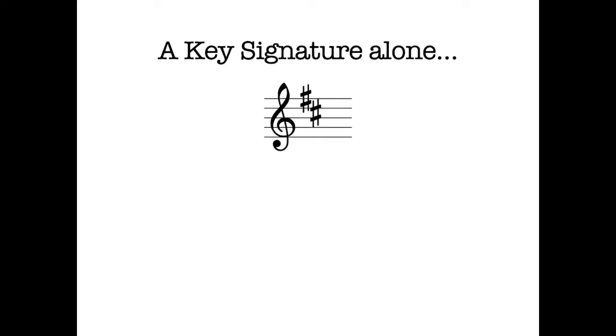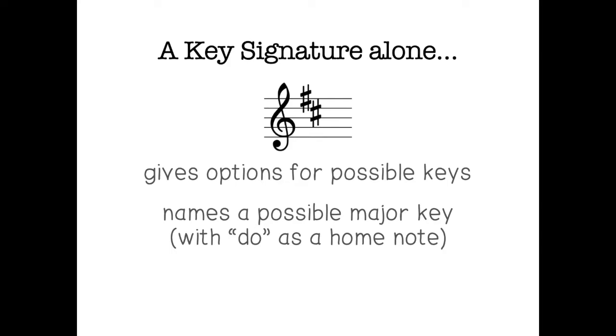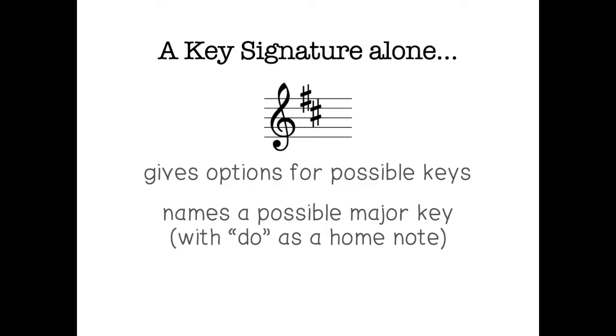Also, a key signature just by itself gives you options for possible keys. It can't tell you which specific one it is, but it narrows down the options for you. So it names a possible major key that would have do as its home note, and it names a possible minor key, which would have la as a home note.